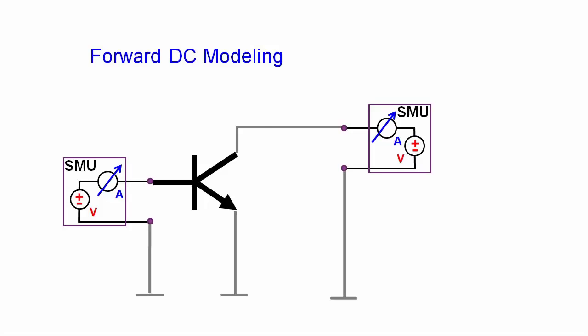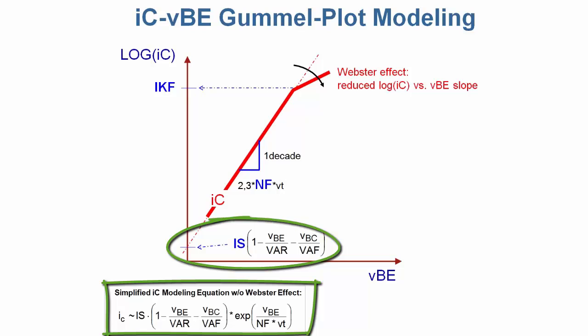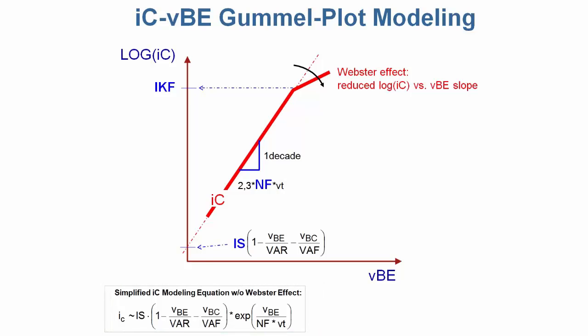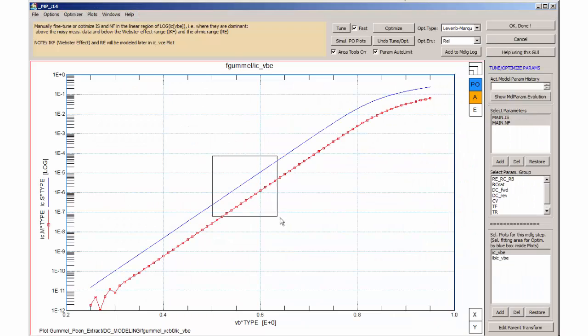And here they come. The first Gummel plot shows the log-scaled collector current versus the base emitter voltage. As shown by the simplified collector current model equation here, the model parameter IS, the saturation current, represents the y-axis intercept together with the previously extracted early voltage parameters. Parameter NF fits the slope together with the known temperature voltage VT. The beginning of the high current compression effect, the Webster effect, is covered by the parameter IKF, but we will fit it rather later, when coming back to the forward output characteristic. I apply the modeling now to a measurement in which the collector voltage is synchronized with the base, which means a base collector voltage of zero volt. This special biasing condition excludes self-heating effects and excludes also the avalanche effect, which is the leakage current between the collector and base. We optimize both IS and NF.